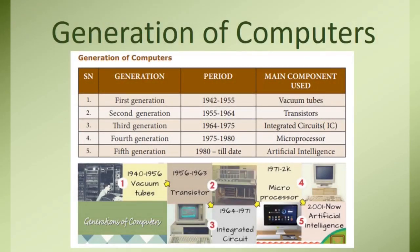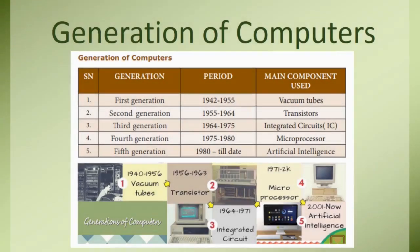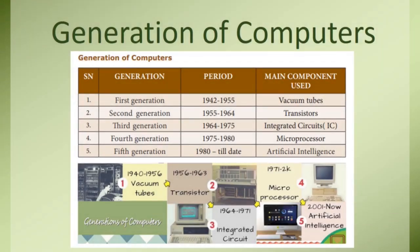Now I will look at the table. There are four columns: first column is serial number, second is generation of computer, third one is period, and fourth one is main component used.